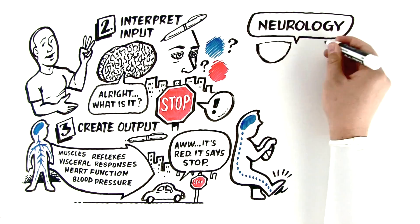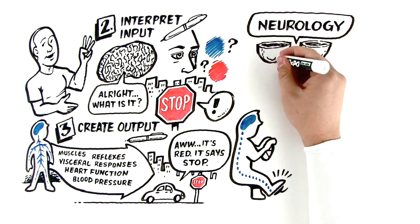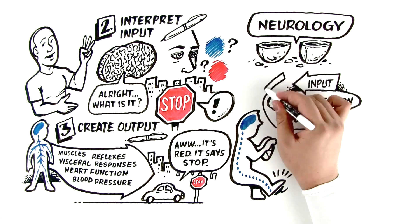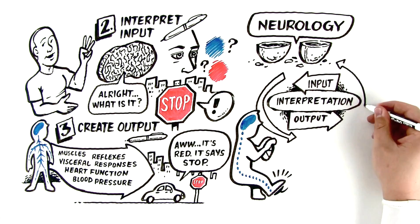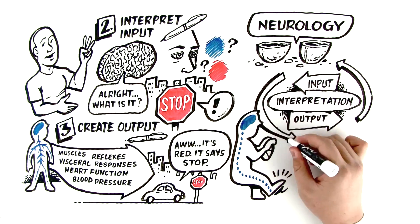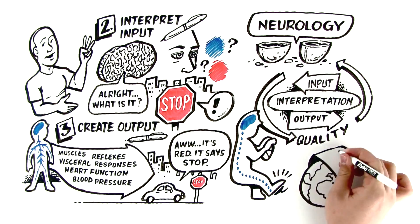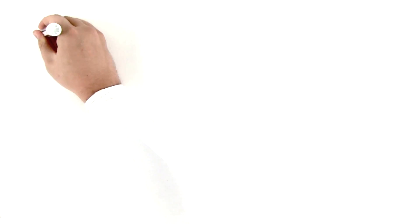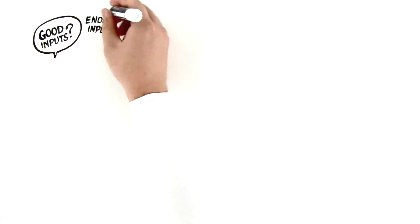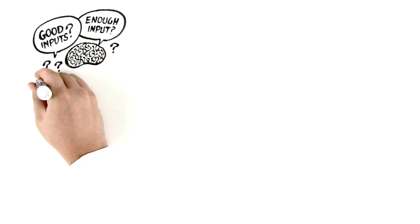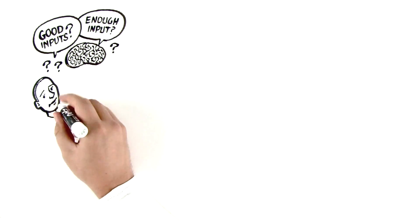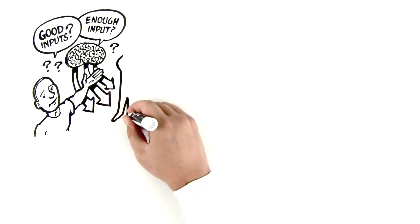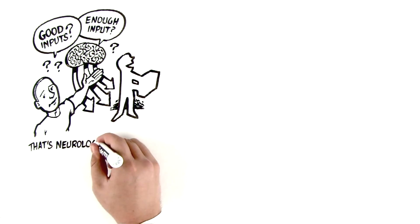Now, as goofy as that may sound, that's it in a nutshell. That's neurology in a nutshell. You have inputs, you have interpretation and decision, and then you have outputs. Now, if you understand this, it's a loop system, which means that the quality of the output, the quality of what I'm able to generate in the world, is incredibly dependent upon the quality of the inputs that I receive. That's Neurology 101, guys.